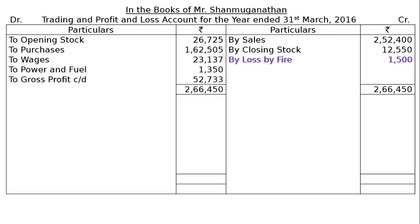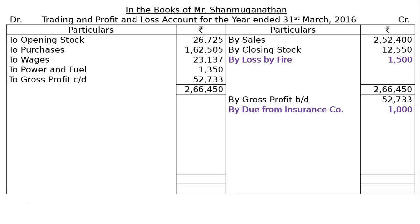In the Profit and Loss Account, on the credit side: By Gross Profit brought down Rs. 52,733; By Due from Insurance Company Rs. 1,000 (the admitted claim). Next is the provision for doubtful debts at Rs. 5,200, which is shown in the credit column of the trial balance, meaning the old provision is larger than the new provision, so it appears on the credit side.